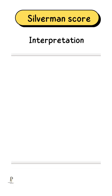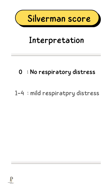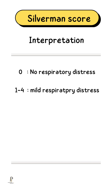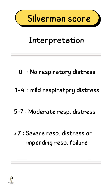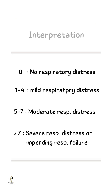Silverman score interpretation: score 0 indicates no respiratory distress; 1 to 4 indicates mild respiratory distress; 5 to 7 indicates moderate respiratory distress; and more than 7 indicates severe respiratory distress or impending respiratory failure.